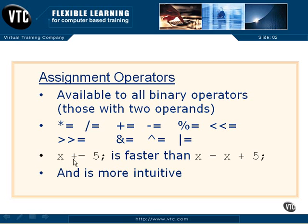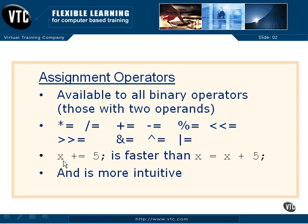So here you can see x plus equals 5. Now we could have written this out as x equals x plus 5, but that's just the long form. This is what we say now in C: x plus equals 5. It means exactly the same thing and exactly the same result will occur — 5 will be added to the existing value in x.